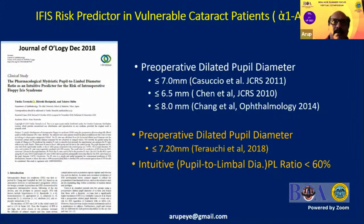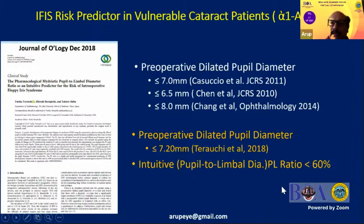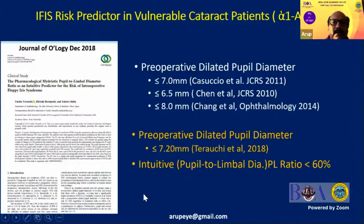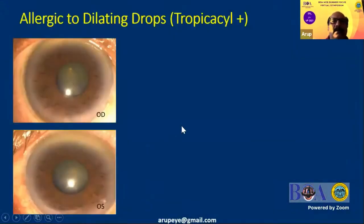This paper describes the intuitive PL ratio — the pupil-to-limbal diameter ratio. You simply look at the patient's dilated pupil, and if it is less than 60% of the limbal diameter by intuition, you can suspect the patient may develop IFIS in the intraoperative period.